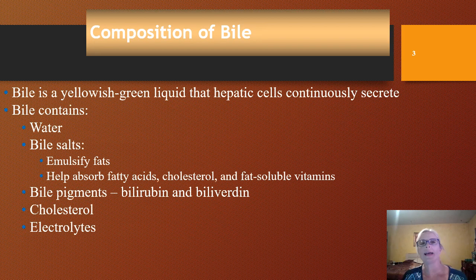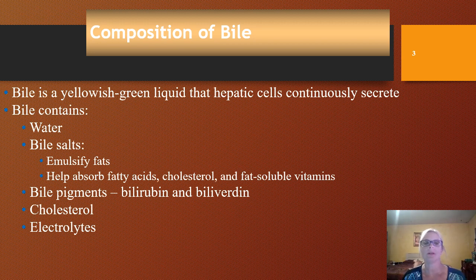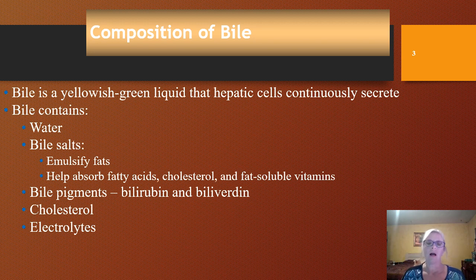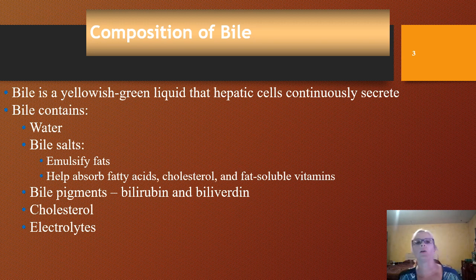So what exactly is bile? Bile contains bile salts, pigments, electrolytes, and cholesterol. Bile salts serve to emulsify fats — they break down fats, surround them, and help us break them down. They also help to absorb fatty acids, fat-soluble vitamins, and cholesterol.